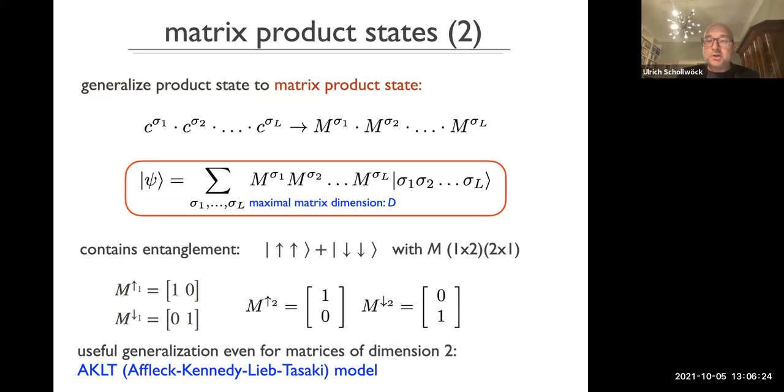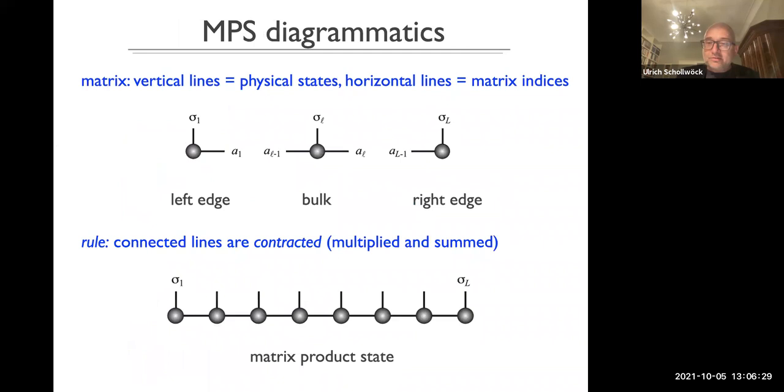Because it's all about tensors, we switch to a graphical notation where it's very simple. If you concentrate on the bulk object in the center, you have this one leg sticking out vertically to denote the physical state. The left and right leg are the indices of the matrix. Writing down a matrix product state where you multiply these matrices is nothing but a contraction where you put these objects next to each other, and if they are connected by a line, they are contracted. So it's an extremely simple graphical notation which quite a lot of the literature is presented in.